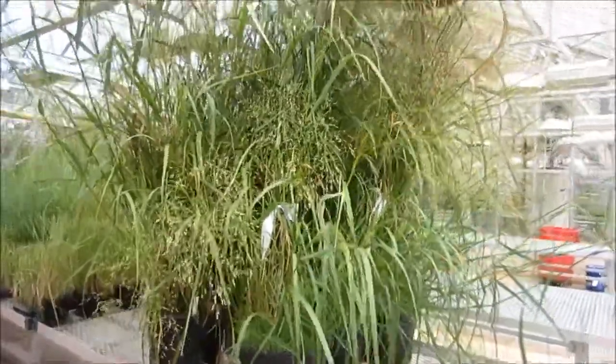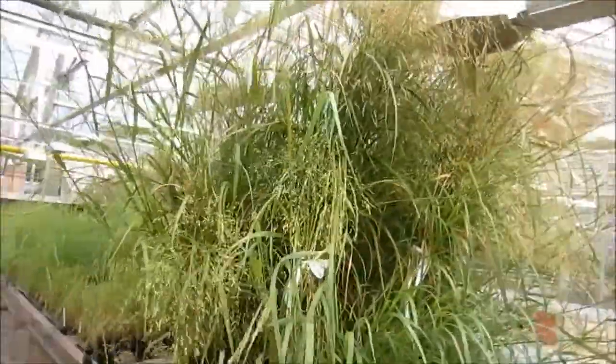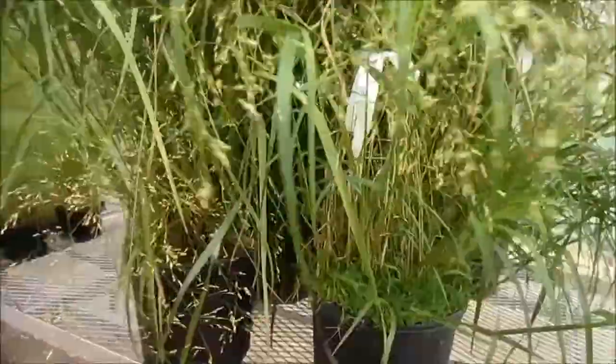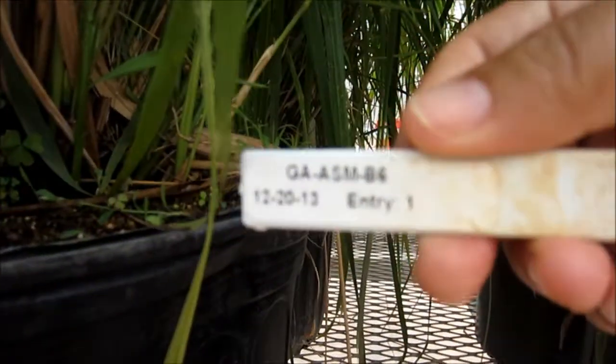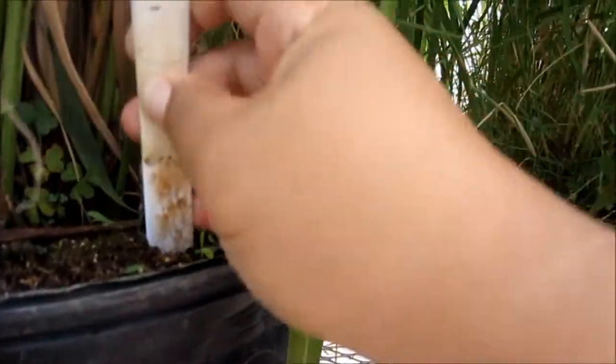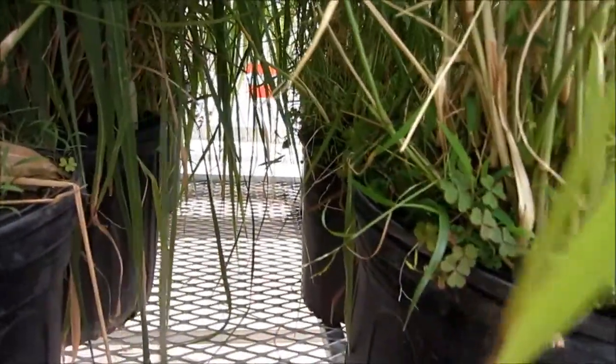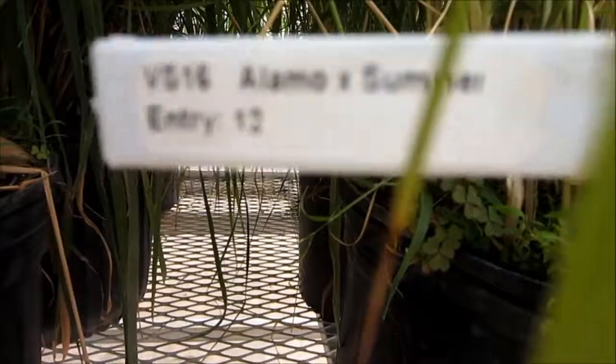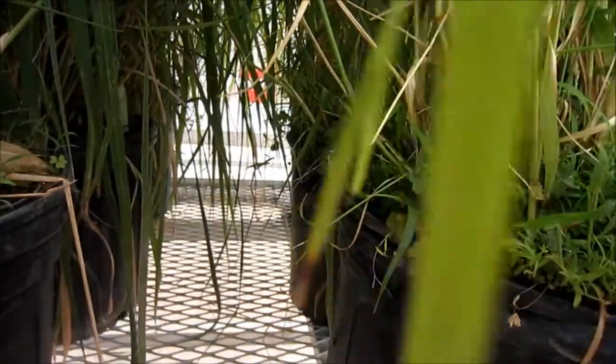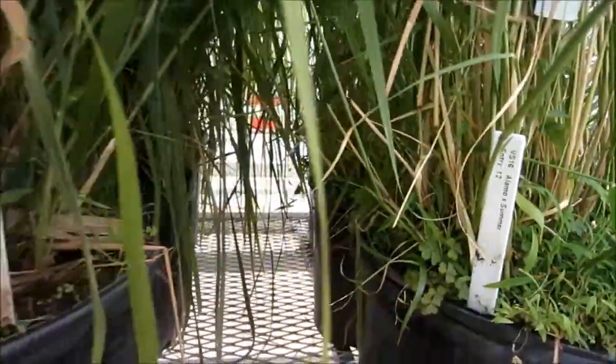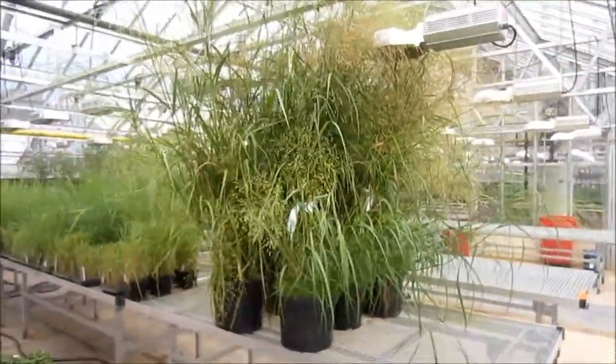To develop F1 population, the chosen parents, which have opposite characters or traits, can be placed together in a greenhouse and let the greenhouse fan help in the pollination. It is important to ensure that no other flowering switchgrass is present in the greenhouse. Here, a non-dormant lowland genotype is being crossed to the winter dormant lowland genotype. Seeds can be collected once they are matured.